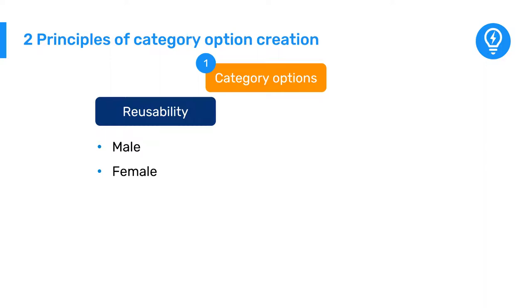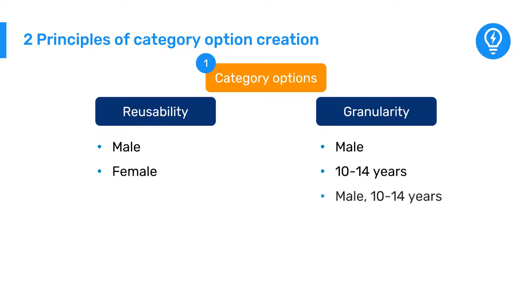Second, granularity. Each category option should represent one concept by itself. We do not want to combine multiple concepts, such as 10-14 years and male in the same option, because this would limit our ability to disaggregate the data for analysis.